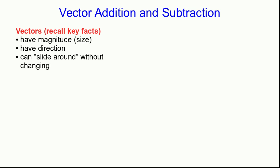And we're going to use some key facts that we already know. Vectors have magnitude and they have direction, and that means they are representable as arrows. And I mean that in a mathematical sense, they really are just like arrows.